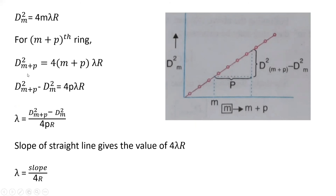For (m + p)th ring, D²ₘ₊ₚ = 4(m + p)λR. So, if we get difference of these two, D²ₘ₊ₚ - D²ₘ = 4pλR.